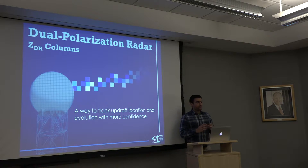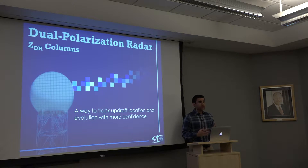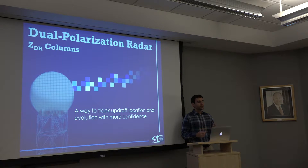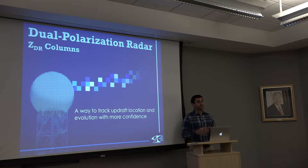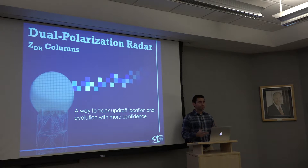Our first official operational application of dual polarization data is a signature called the ZDR column. It's a way to track updraft location and evolution with more confidence. We have a unique signature that can tell us where a thunderstorm updraft is, how it's evolving, whether it's strengthening or weakening.